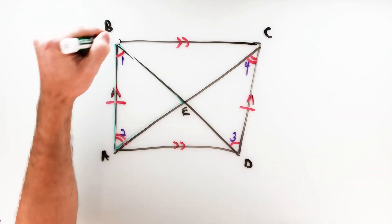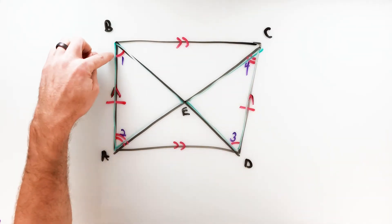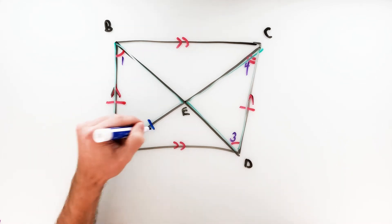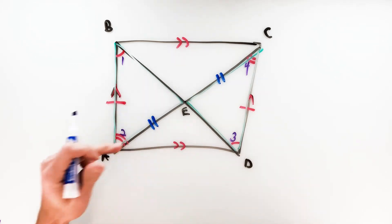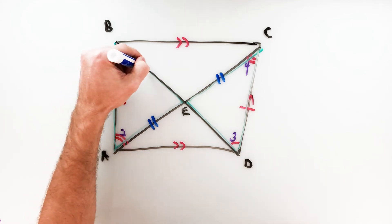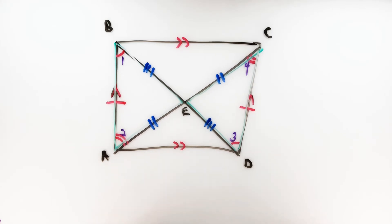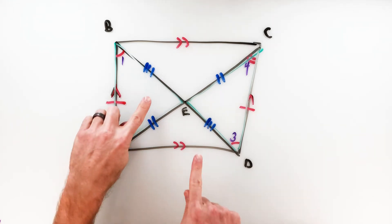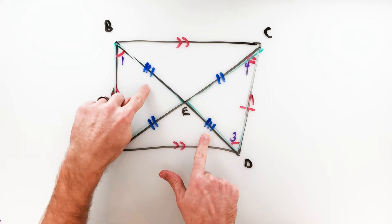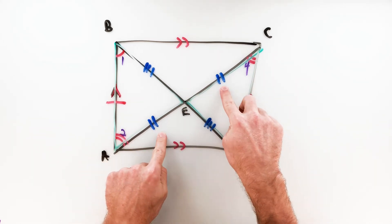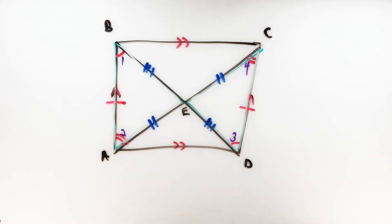Since triangle ABE and triangle CED are congruent by Angle-Side-Angle, by CPCTC all other corresponding parts must be congruent. So segment AE and segment CE are equal, and segment BE and segment DE are equal. That means diagonal BD has been cut in half at point E, and diagonal AC has also been cut in half at point E. Therefore, the diagonals of a parallelogram do bisect each other. Those are the three properties.